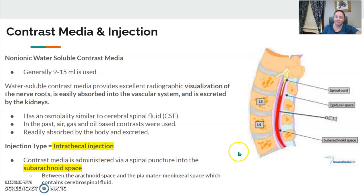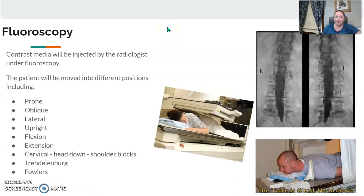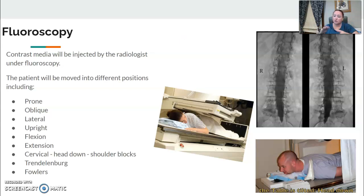The subarachnoid space is between the arachnoid and the pia mater and contains the cerebrospinal fluid, which is what we're usually sending for testing or injecting through. During fluoroscopy, the radiologist will move the table and the patient — possibly into a straight prone position, obliques, or standing the patient up using the pluro table. Make sure your footboard is on. They might also ask for flexion-extension views.